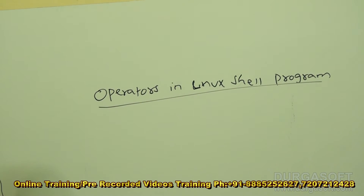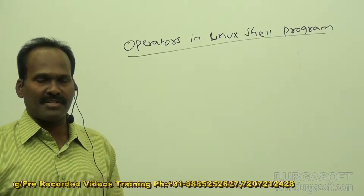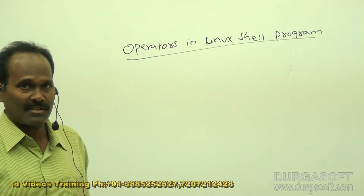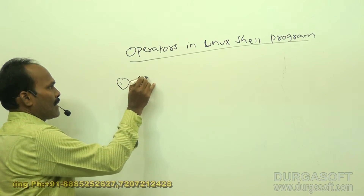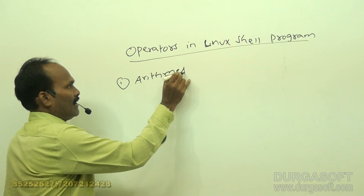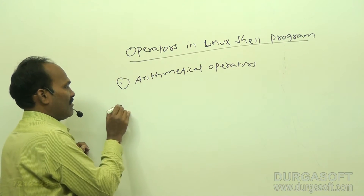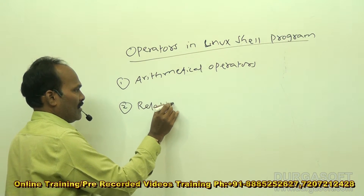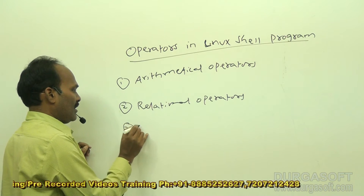Normally in any language — C, C++, .NET, Java, or shell programming — to perform various types of calculations we use operators. In Linux shell programming we have these types of operators: arithmetical operators, which are used to perform arithmetical calculations; relational operators; and logical operators.